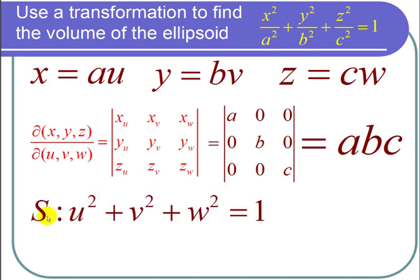So now recall the solid was defined as u squared plus v squared plus w squared equals 1. That's what happened after we performed the substitution in this ellipsoid equation.